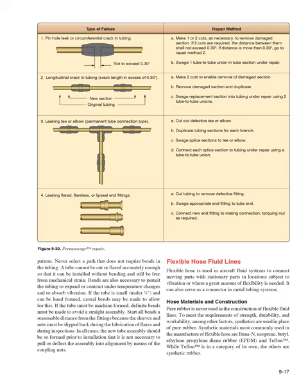Flexible hose fluid lines: flexible hose is used in aircraft fluid systems to connect moving parts with stationary parts in locations subject to vibration or where a great amount of flexibility is needed. It can also serve as a connector in metal tubing systems. Hose materials and construction: pure rubber is never used in the construction of flexible fluid lines. To meet the requirements of strength, durability, and workability, synthetics are used in place of pure rubber. Synthetic materials most commonly used in the manufacture of flexible hose are BUNA-N, neoprene, butyl, ethylene-propylene diene rubber (EPDM), and Teflon. While Teflon is in a category of its own, the others are synthetic rubber.